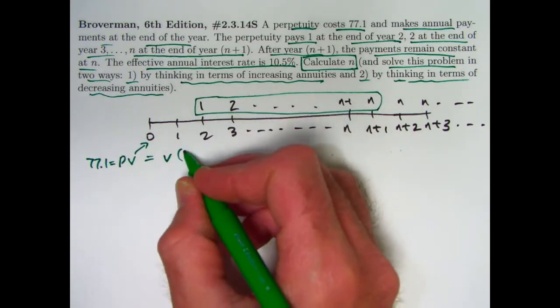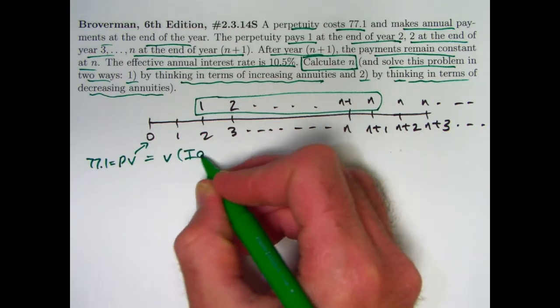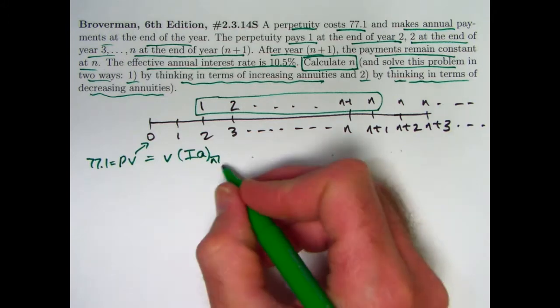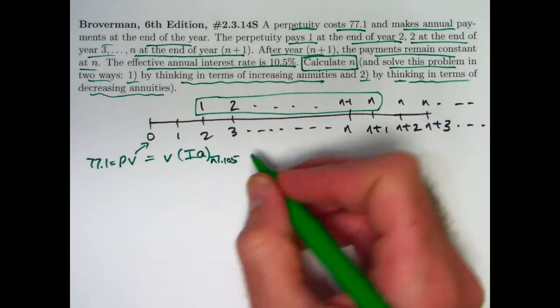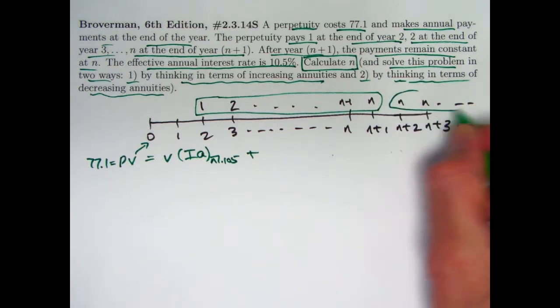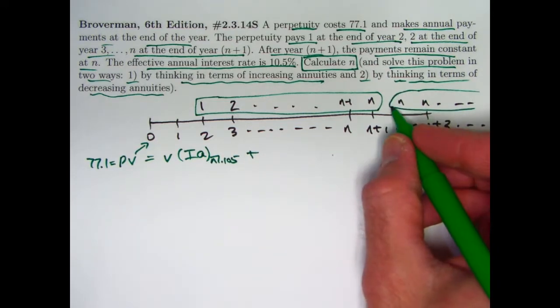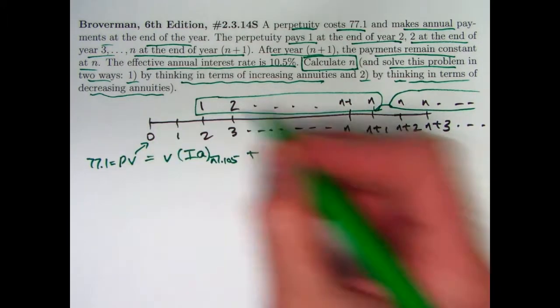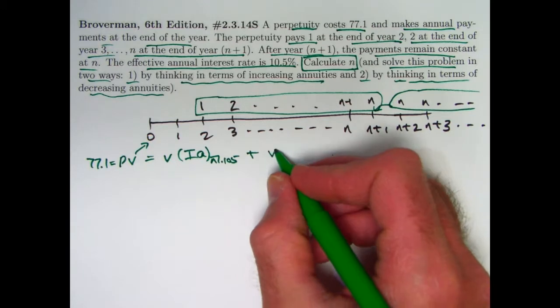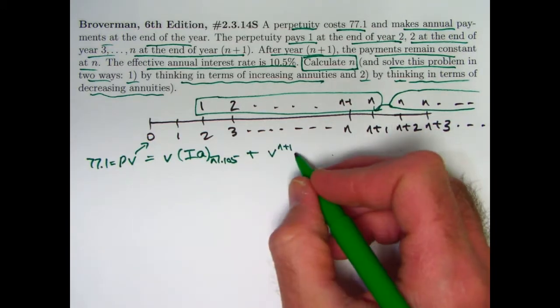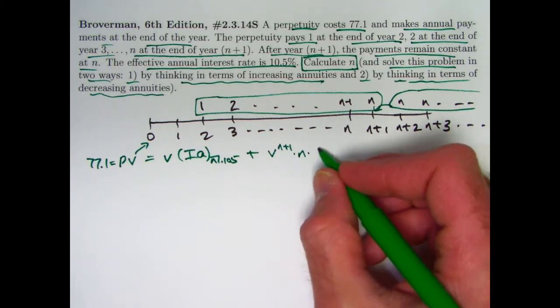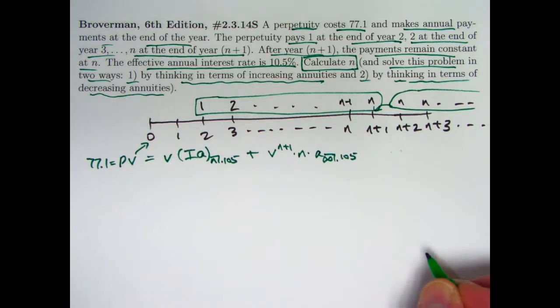So the present value at time 0, which is 77.1, equals, well, first of all, again, we have V times, symbolically, the present value of this at time 1 would be, excuse me, IA sub N, with interest rate 0.105. And then the other piece is this perpetuity that goes on forever. If I find its present value one period before the first payment, that would be at time N plus 1. If I want to discount that back in time to time 0, I need to multiply by V to the N plus 1. It's got level payments of N, so it's N times your basic perpetuity, the present value being A sub infinity, 0.105.